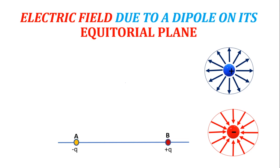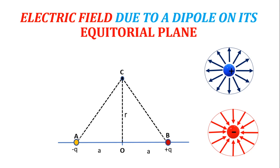Consider a dipole minus Q and plus Q at points A and B, and C is the midpoint of the dipole, and 2A is the distance between the dipole. Let us consider a point C at a distance R from O. We know that the charges plus Q and minus Q produce a field at this point. The positive charge will produce a field moving outwards, so the field at this point will be outwards along the line joining B and C, and so the direction will be BC.